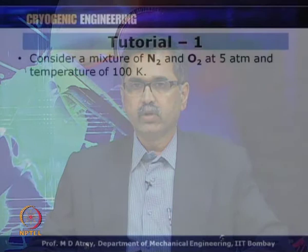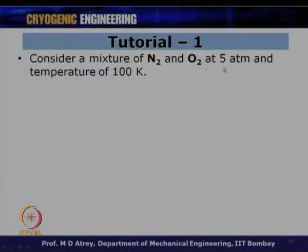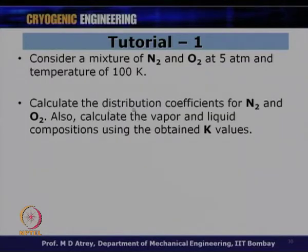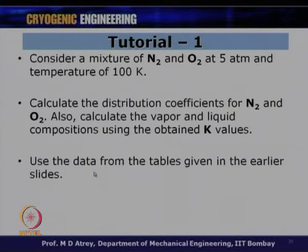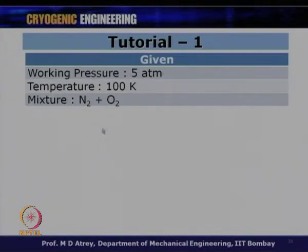Tutorial 1: Consider a mixture of nitrogen and oxygen at 5 atmosphere and a temperature of 100 K. Calculate the distribution coefficients of nitrogen and oxygen (K_N2 and K_O2). Also calculate the vapor and liquid compositions (Y_N2, Y_O2, X_N2, X_O2) using the obtained K values. Use the data from the table given in the earlier slide. The working pressure is 5 atmosphere and temperature is 100 K for a nitrogen-oxygen mixture.